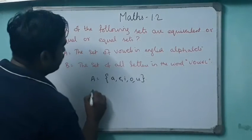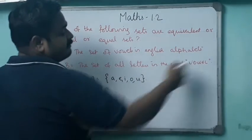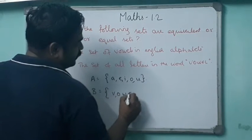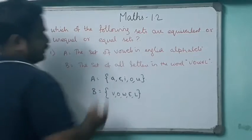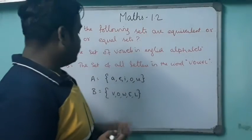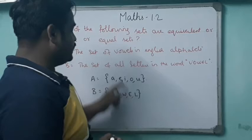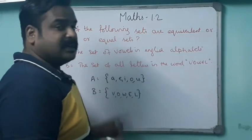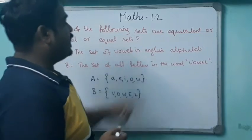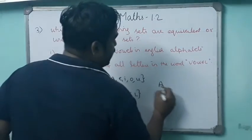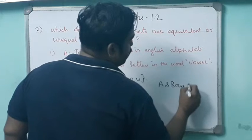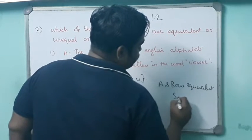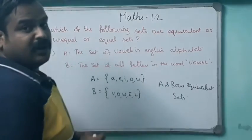Now go for set B. The set of all letters in the word 'vowel' — V, O, W, E, L. Set A has the same number of elements. The elements are also the same. Therefore, set A and set B are equal sets, and they are also equivalent sets.